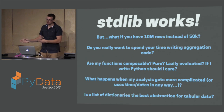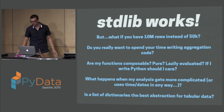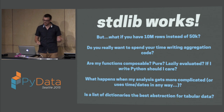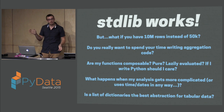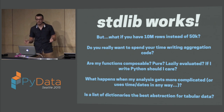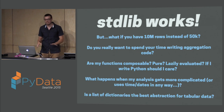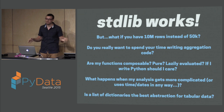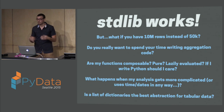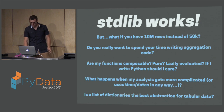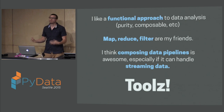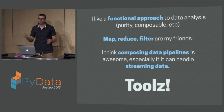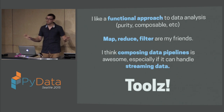But what if you have 10 million rows rather than 50,000 rows? Do you really want to spend your time writing aggregation code? Surely someone else has done this before and it's probably very fast. Are my functions composable, pure, lazily evaluated? What happens when my analysis gets more complicated or uses times and dates — which is one of the worst things to deal with in this type of analysis? And is a list of dictionaries really the way that I want to work with tabular data?